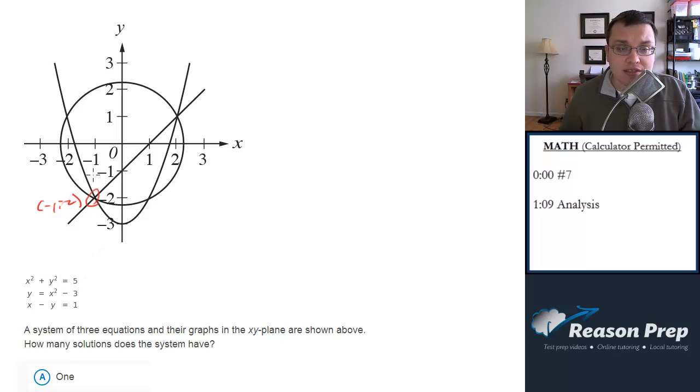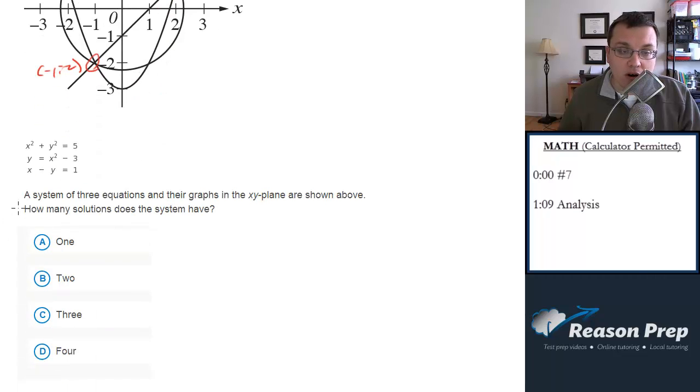Are there any other points where all three curves intersect? Yes, there's one right here. And so that would be another solution, but that's it. So this right here is a point where two of the equations are solved, but not three. Here's another point where two are solved, not three. So the only ones that work here are those two.